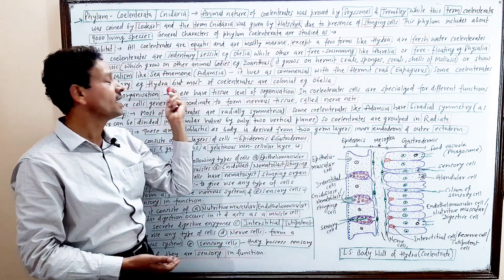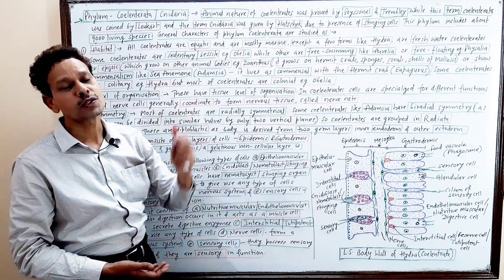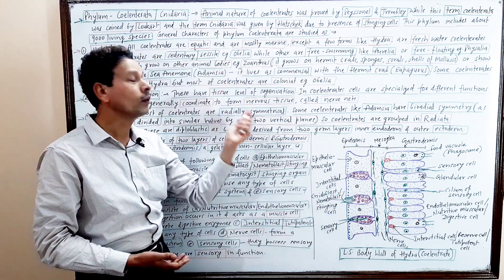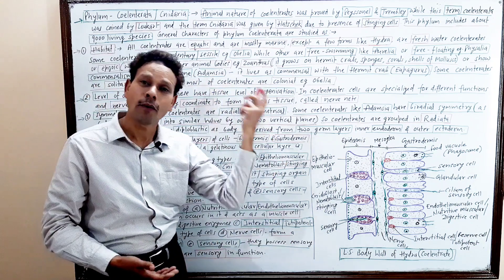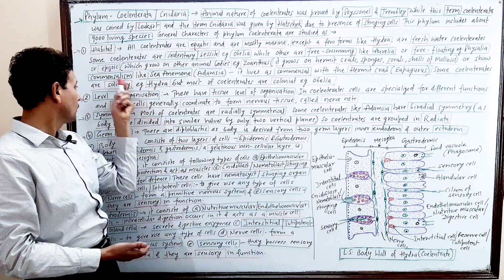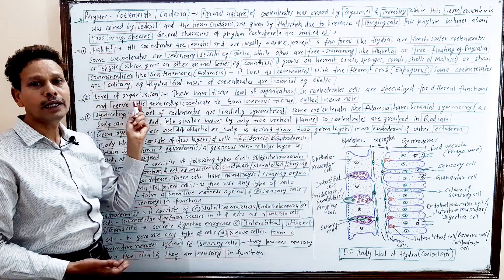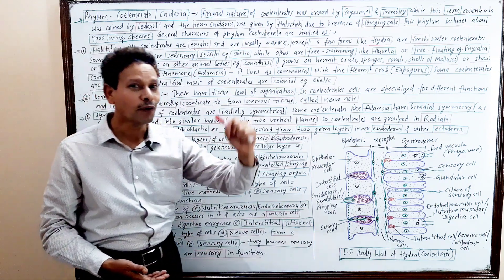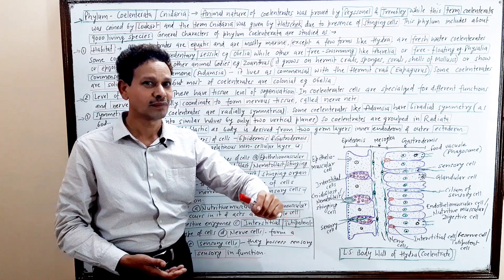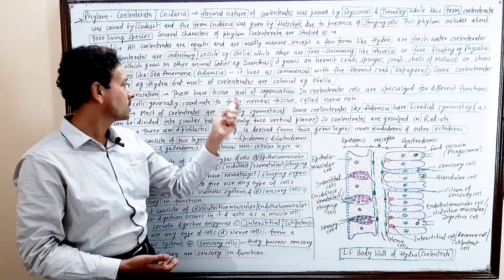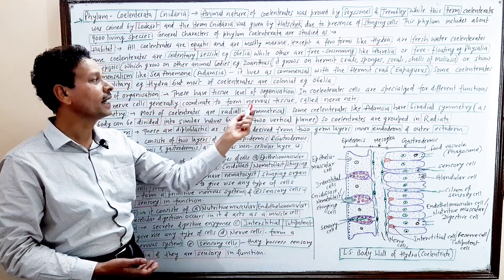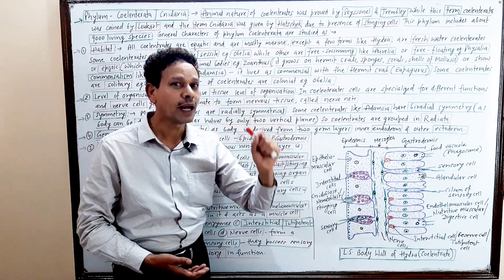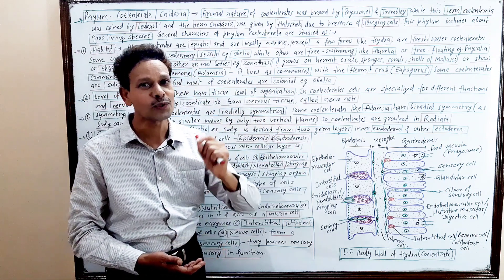Some coelenterates are solitary, found singly, like Hydra. Some are colonial, like the Obelia colony. The second important characteristic is the level of organization. These coelenterates have tissue level of organization.